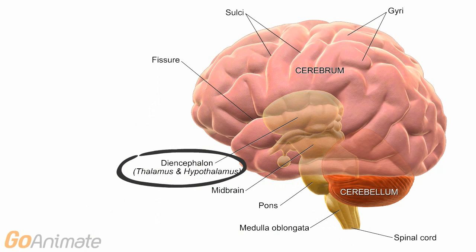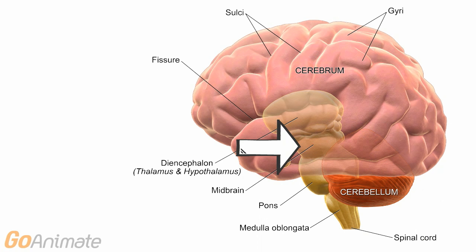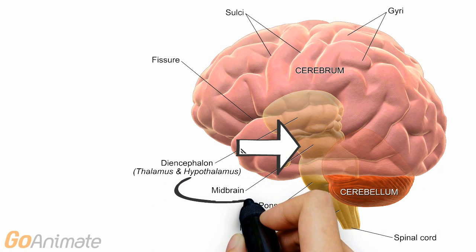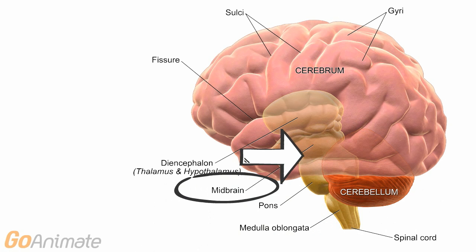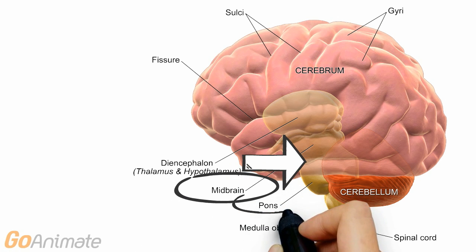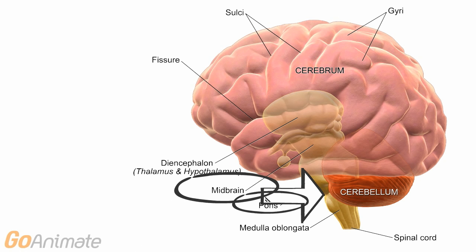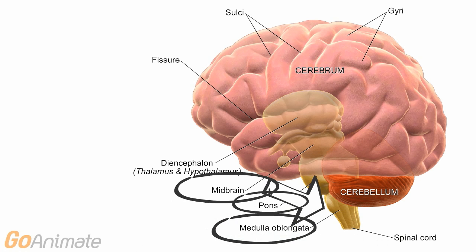Deep to the cerebrum is the diencephalon, which contains the thalamus and hypothalamus. Just below the diencephalon is the brain stem, which consists of three parts. The superior portion is called the midbrain. Just below the midbrain is the pons, and below the pons is the medulla oblongata.